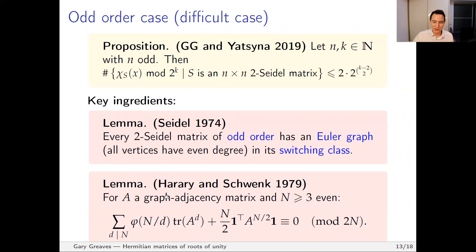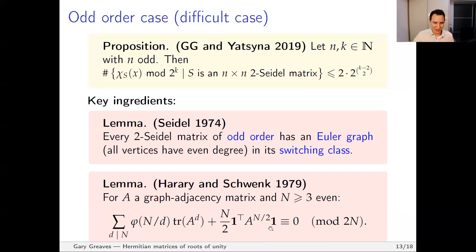For the odd case — considered the difficult case — to get the extra substance we needed, we used the quite beautiful classical result of Harary and Schwenk, which gives a congruence for graph adjacency matrices. The proof is a nice application of Burnside's lemma: you let the dihedral group act on closed walks, count orbits, and you get this congruence. Very nice.